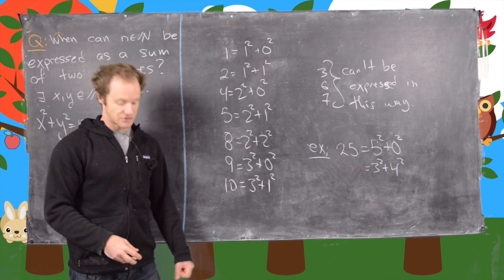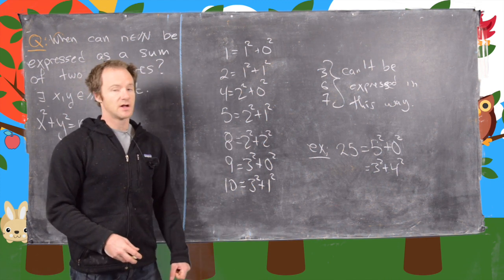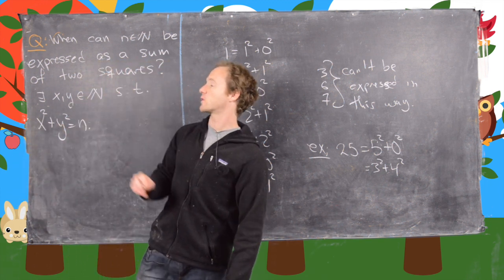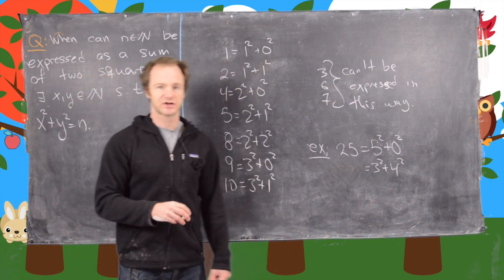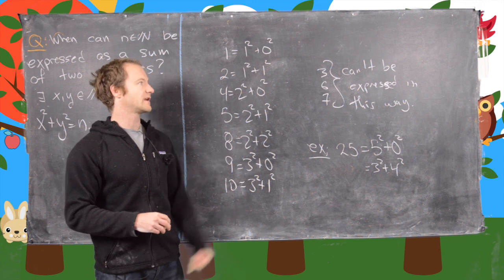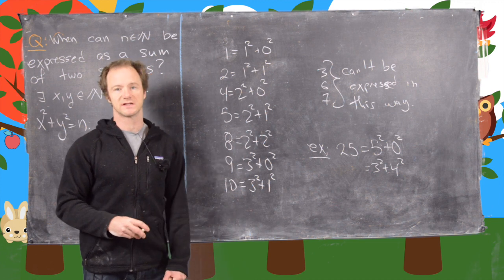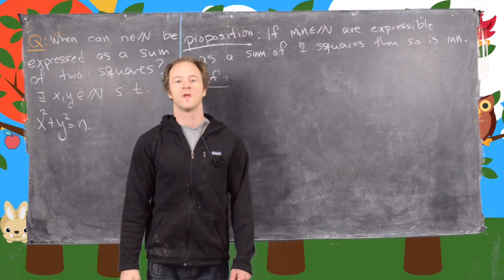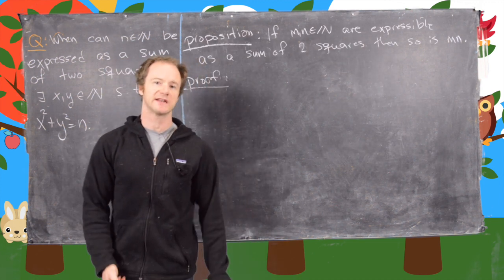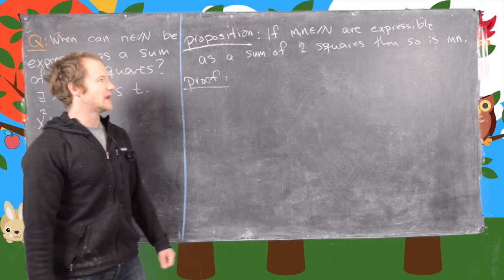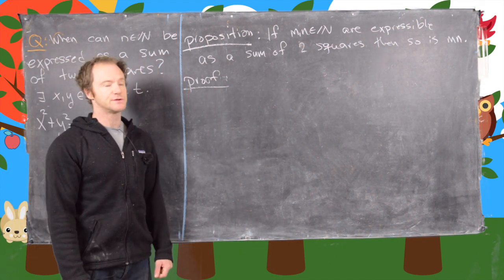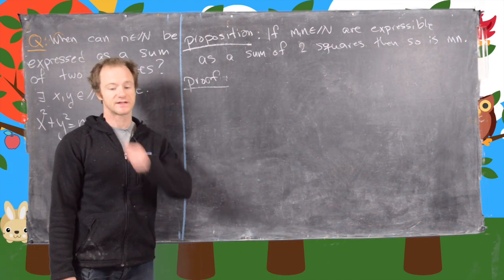I've got two little results involving our path towards answering this question that I want to do in the remaining part of the video. The first little result we want to look at is the following: if m and n are expressible as the sum of two squares, so is their product. This is a nice little result.